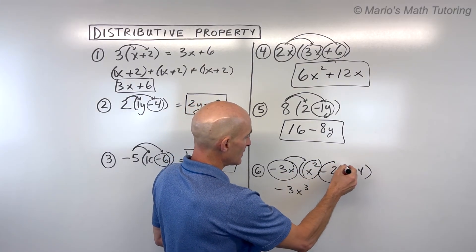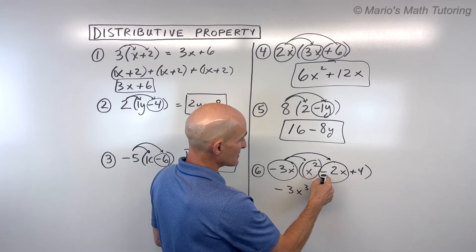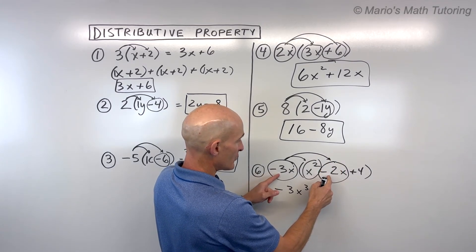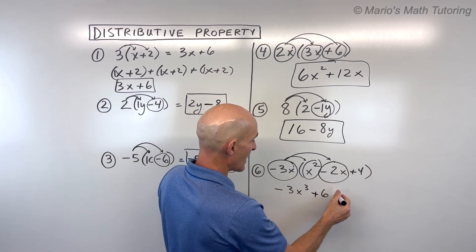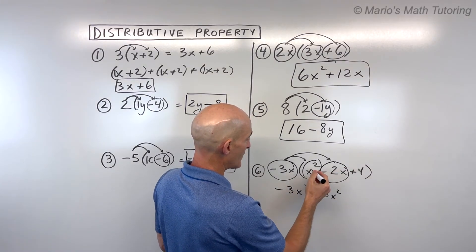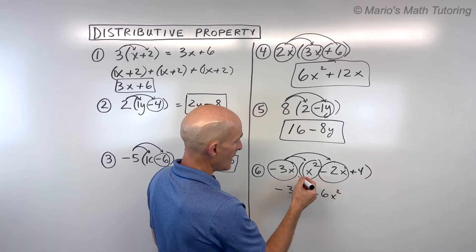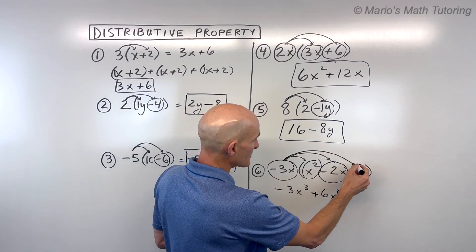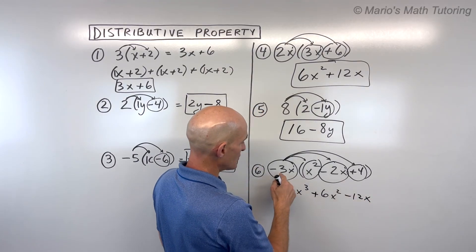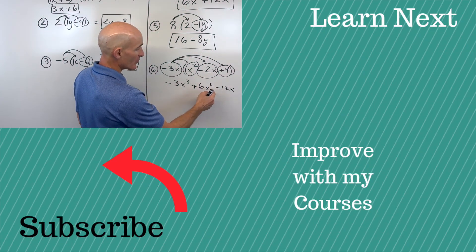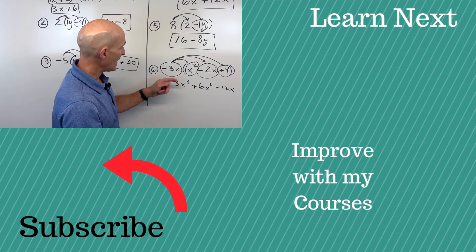Then we're taking negative 3x times negative 2x. So negative 3 times negative 2 is positive 6. x times x is x². Again, remember, we're adding those exponents. 1 plus 1 is 2. And then negative 3x times positive 4 is negative 12x. So a negative times a positive is a negative. We can write that as a minus sign. And you got it. So that's the final result.